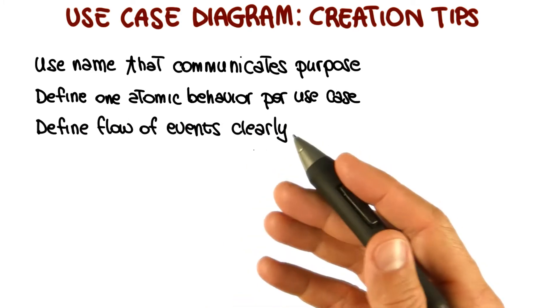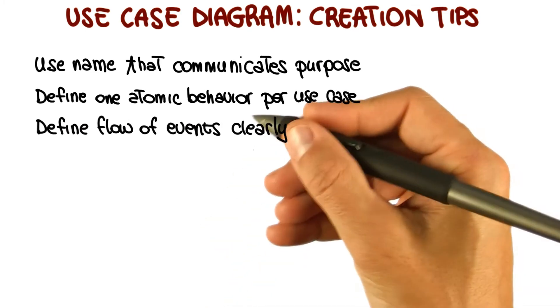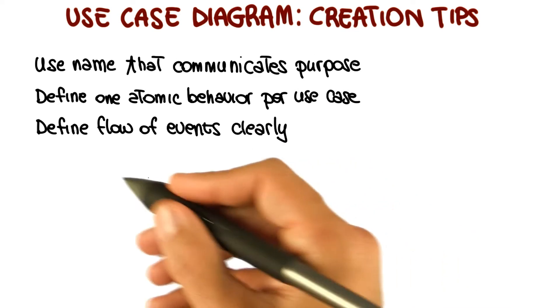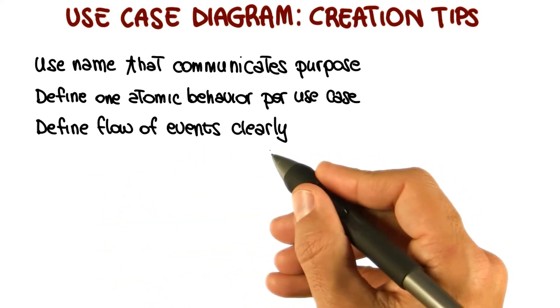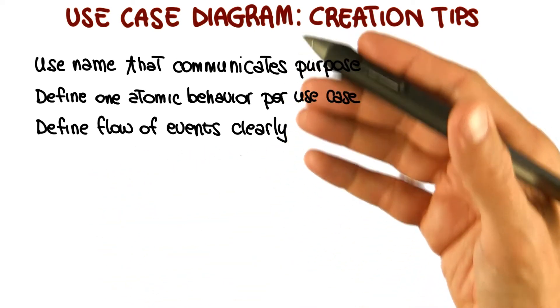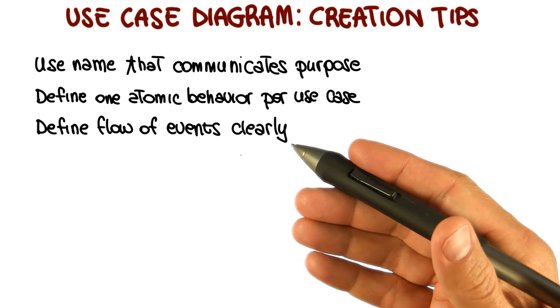Define the flow of events clearly. Do it from the perspective of an outsider. An outsider should be able to read the description of the flow of events and understand exactly how the system works or how the specific piece of functionality works.